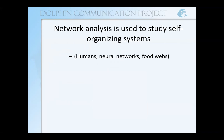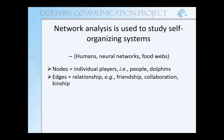Network analysis is used to study self-organizing systems. This includes human systems, but also neural networks, food webs, and things like that. In these systems, our nodes represent individual players — that could be individual humans, individual dolphins, individual neurons, or levels of the food chain. And then the edges between them represent the relationship: friendship, collaboration, kinship, a neural connection, or in a food web, where carnivores are eating lower levels of the food chain.